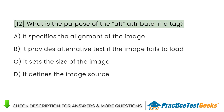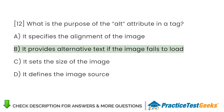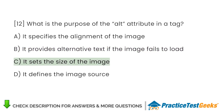What is the purpose of the alt attribute in an image tag? A. It specifies the alignment of the image. B. It provides alternative text if the image fails to load. C. It sets the size of the image. D. It defines the image source.